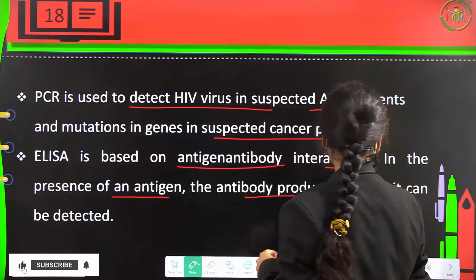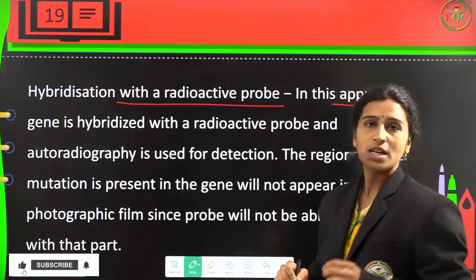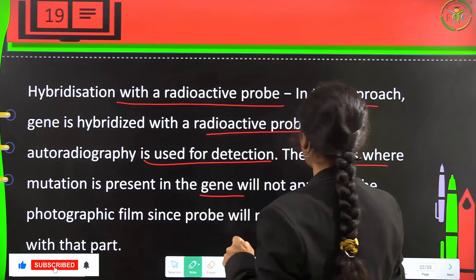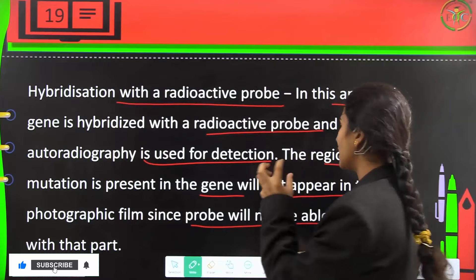Hybridization with a radioactive probe: in this approach, the gene is hybridized with a radioactive probe and autoradiography is used for detection. Regions where mutation is present will not appear on the photographic film since the probe will not be able to bind to that part.